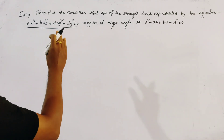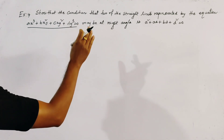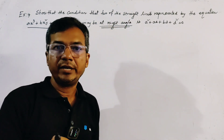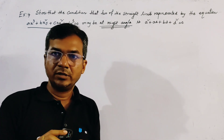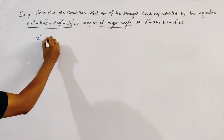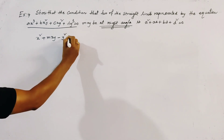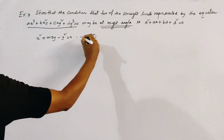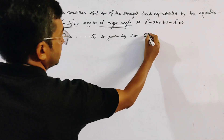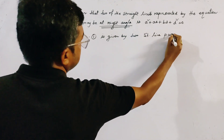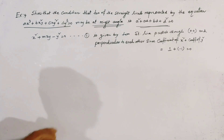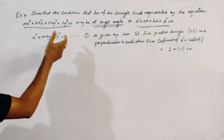Two of these three lines are perpendicular to each other, as given in the problem. So we first consider a pair of straight lines passing through the origin which are perpendicular to each other. We know that the pair of straight lines given by x² + mxy - y² = 0 represents two straight lines through the origin that are perpendicular to each other.